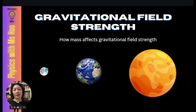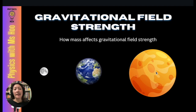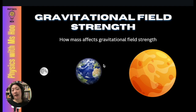First things first, you must understand how mass affects gravitational field strength. Gravity is definitely affected by mass — the greater the mass of an object, the greater its gravitational field strength. If we compare celestial bodies of different masses, for example, the Moon against Earth: the Moon's gravitational field strength is about one-sixth of Earth's, because its mass is significantly smaller than Earth's.